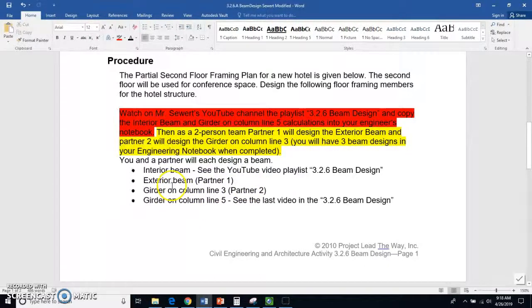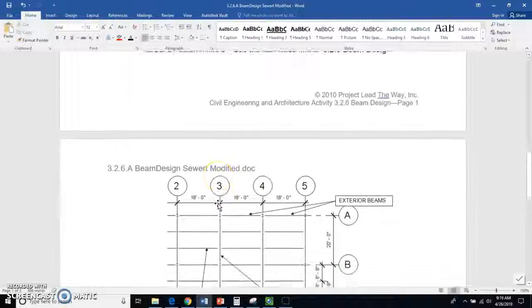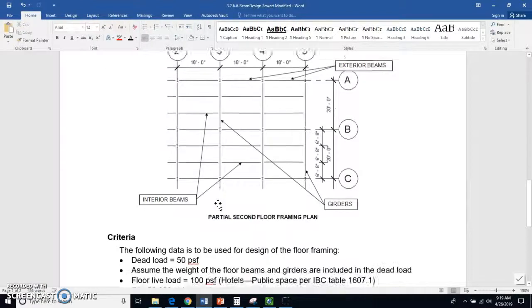One of the things you have to remember is that with exterior beams, the tributary area is one half of what the tributary area is for an internal beam or an internal girder. Same thing for girders: the external girder on line 5, the tributary area is going to be one half of what it was for the internal girder.